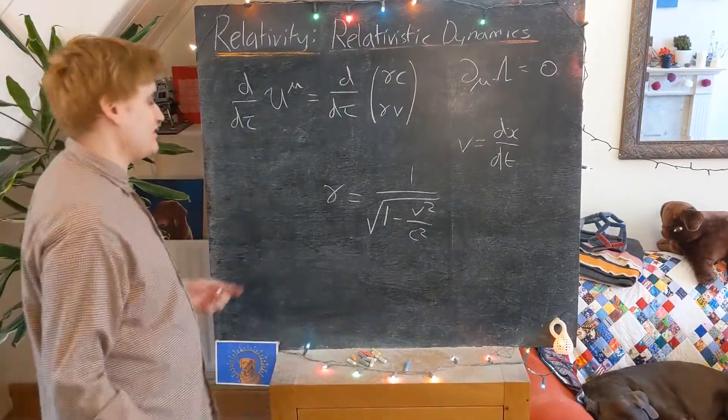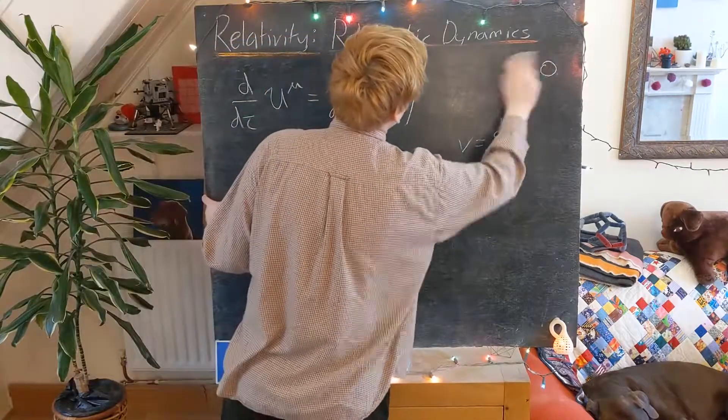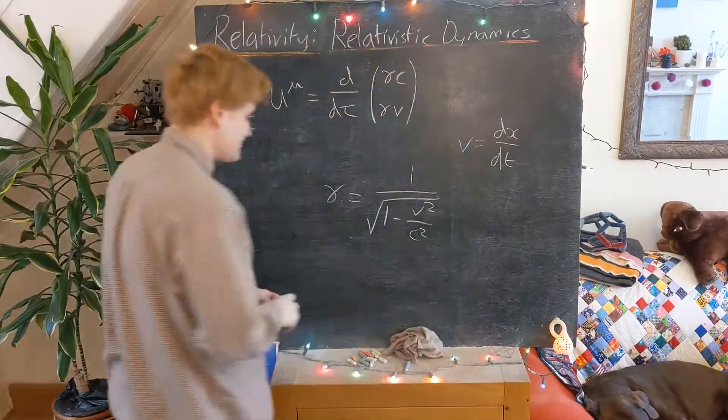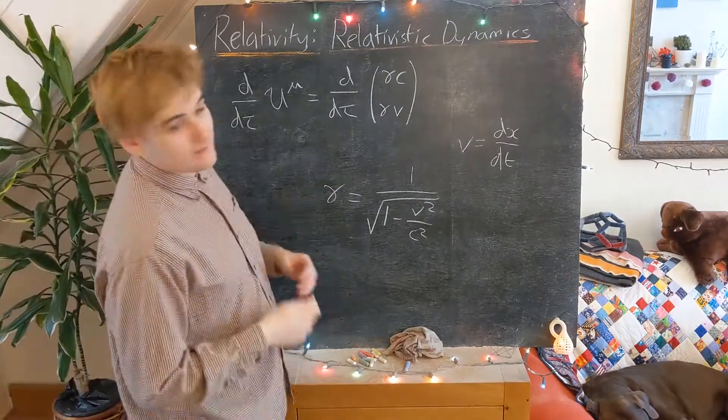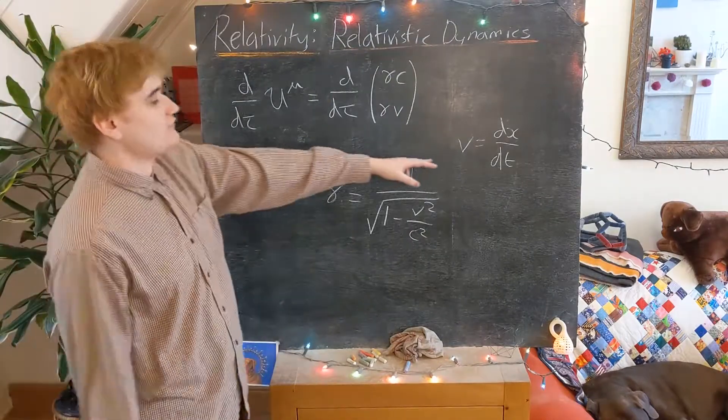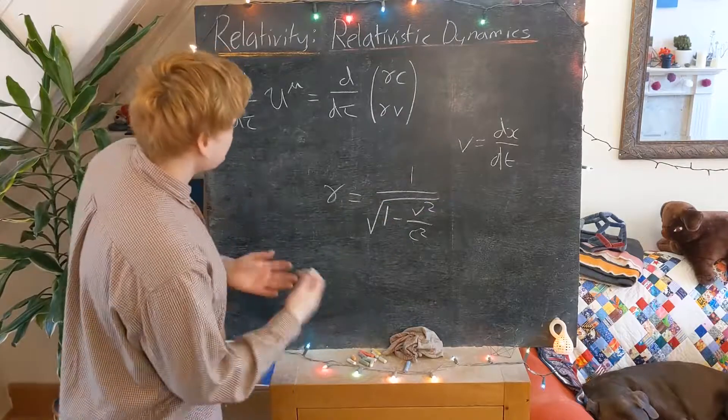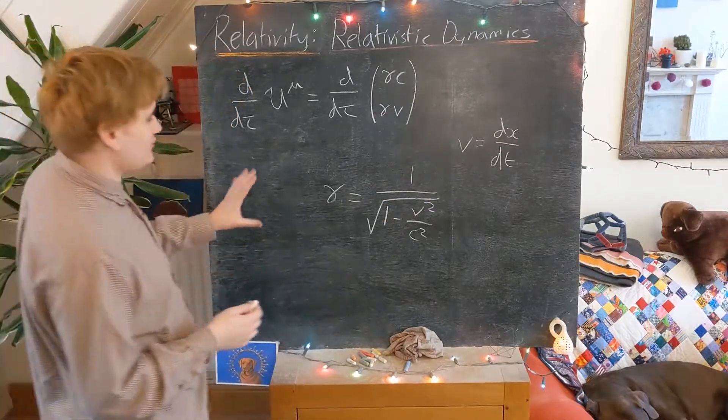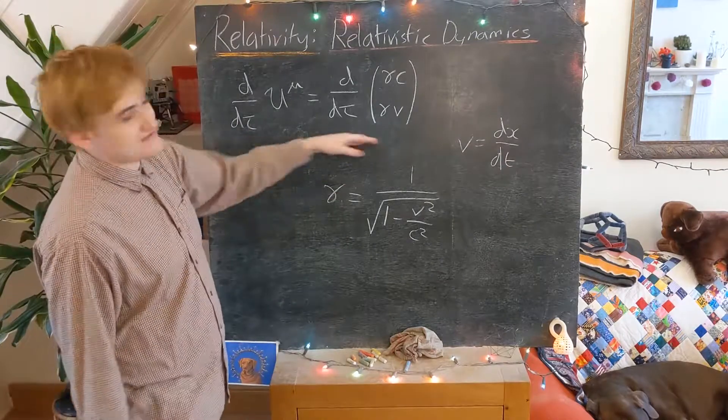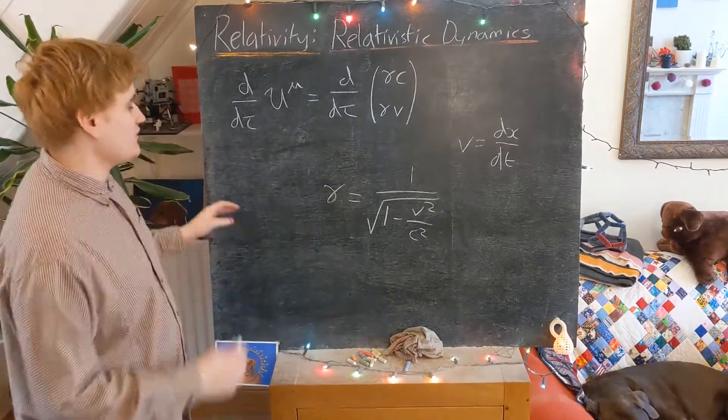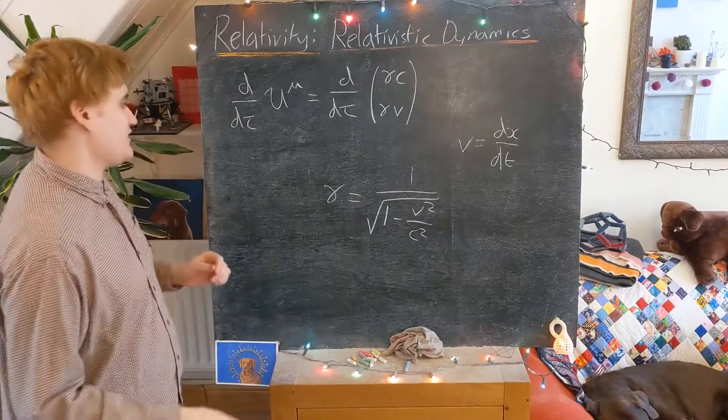But now this is OK because we know that accelerated observers are going to correspond to non-inertial reference frames, i.e. reference frames that don't move with a constant velocity. And so it's perfectly valid that we can't Lorentz boost into now an accelerated reference frame, because that would then be a non-linear transformation.